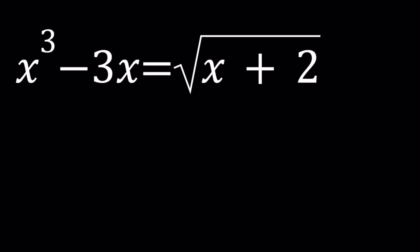Hello everyone. In this video we're going to be solving a radical equation. This problem is from '100 Problems in Algebra' and this is one of the introductory problems. We have the equation x cubed minus 3x is equal to the square root of x plus 2, and we're going to solve for x values.